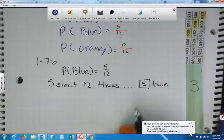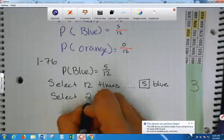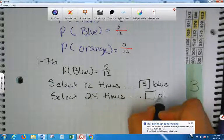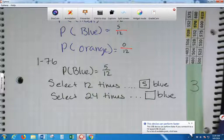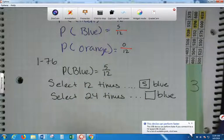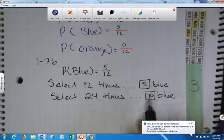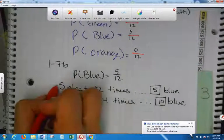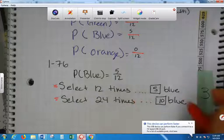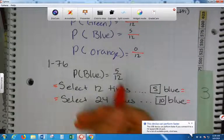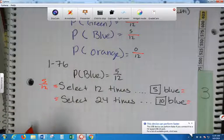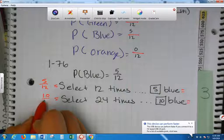So, but what if I select twenty-four times? How many blues should I get? Didn't I just double this? So, what would be this fraction? I'm going to write it over here. If you can write it on the other side, that would actually be better. What fraction would this be? Five over twelve. What fraction would this be? Ten over twenty-four. Yeah, you're right.